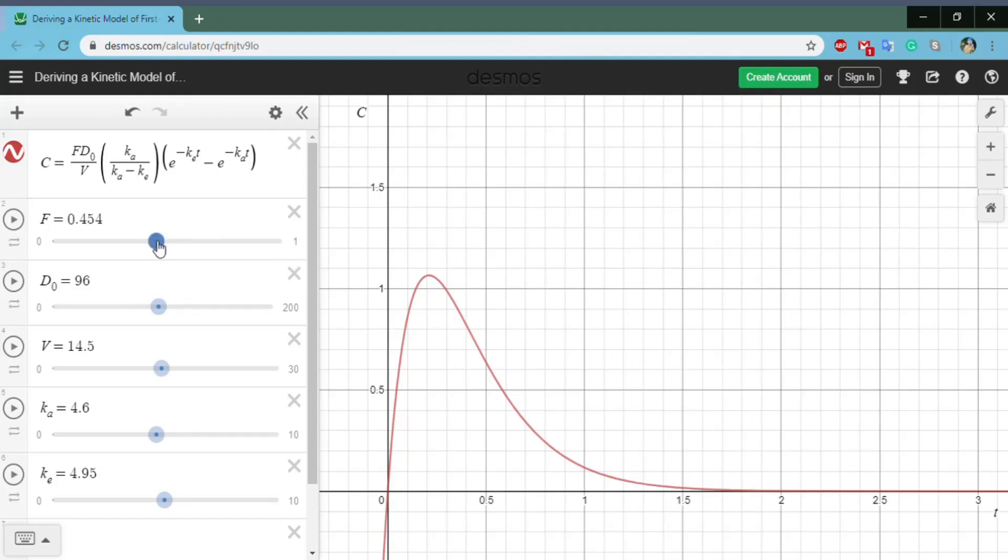If we increase F, if we increase the fraction of the drug that's absorbed, obviously the curve is going to go up, because you're getting more and more drug into the body. Similarly, decreasing F will make it go down. That's very intuitive.